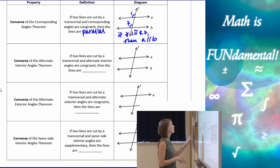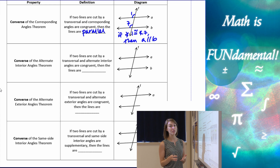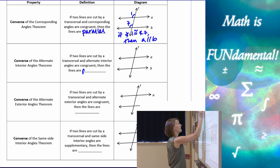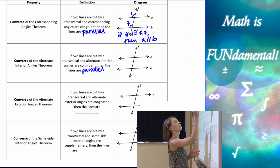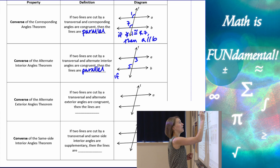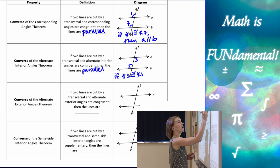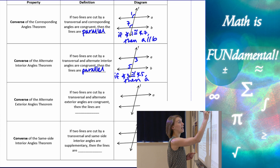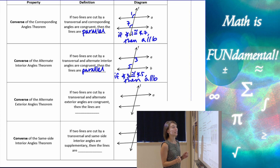Similarly, the converse of the alternate interior angles theorem states that if two lines are cut by a transversal and alternate interior angles are congruent, then the lines are parallel. So if angle three is congruent to angle five, then I can use this theorem to state that A is parallel to B.